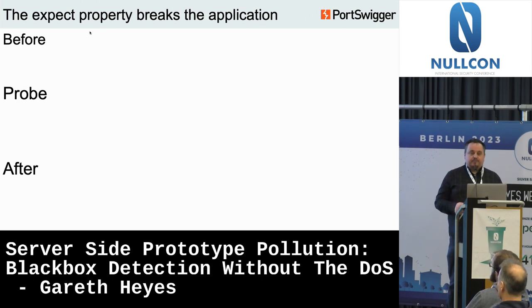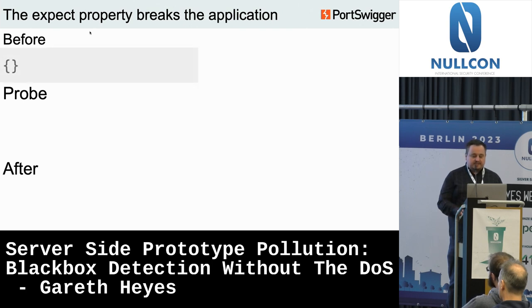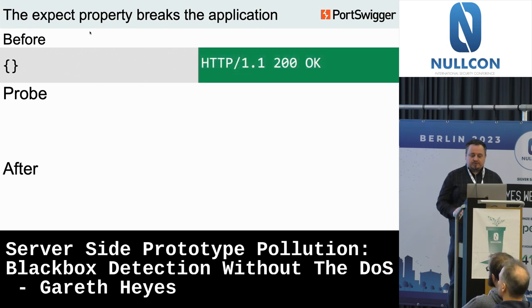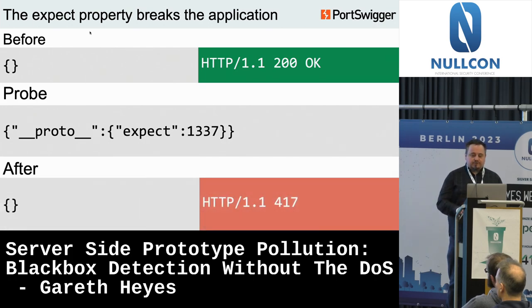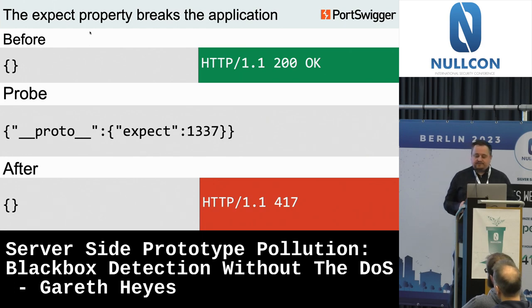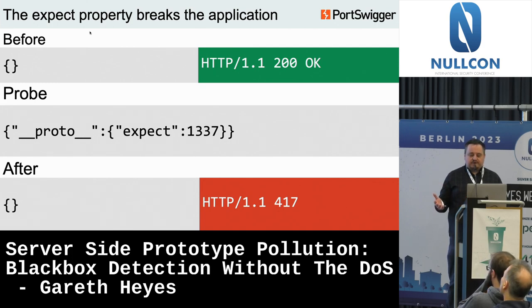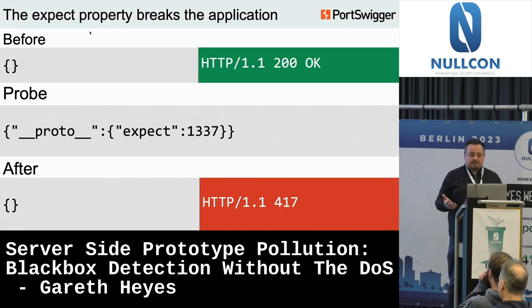After trying many different properties, I guessed the 'expect' header. First I sent a blank JSON request and got a 200 back, then sent a probe with the 'expect' property with an arbitrary value — 'leaked'. When the request is sent again, instead of a 200, you get a 417 Expectation Failed status code. But this code was appearing every time, so not ideal. I needed to investigate why using the --inspect-brk flag in Node, which sets a breakpoint before your application code executes.